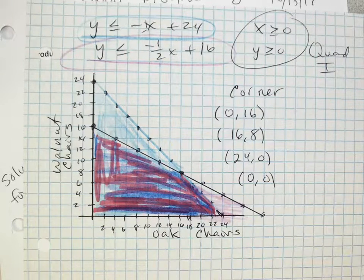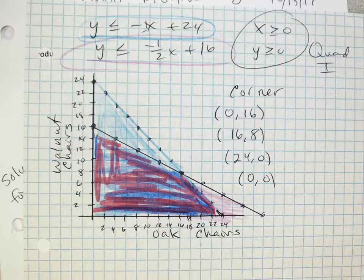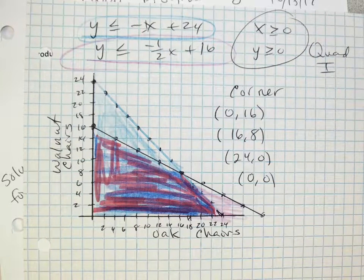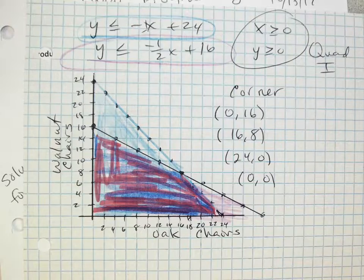So I'm going to ask you the easiest question. Everybody better get this. What value would be our minimum? Everybody agree? Zero, zero. If you don't make any chairs, you don't make any money. You agree? So zero, zero is definitely our minimum. That's our minimum.